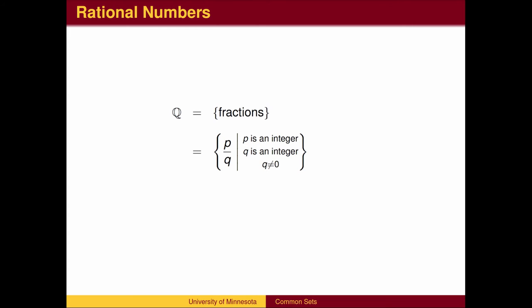In set builder notation, the set of rational numbers is the set of all fractions P over Q, such that P and Q are integers, and Q is not 0.